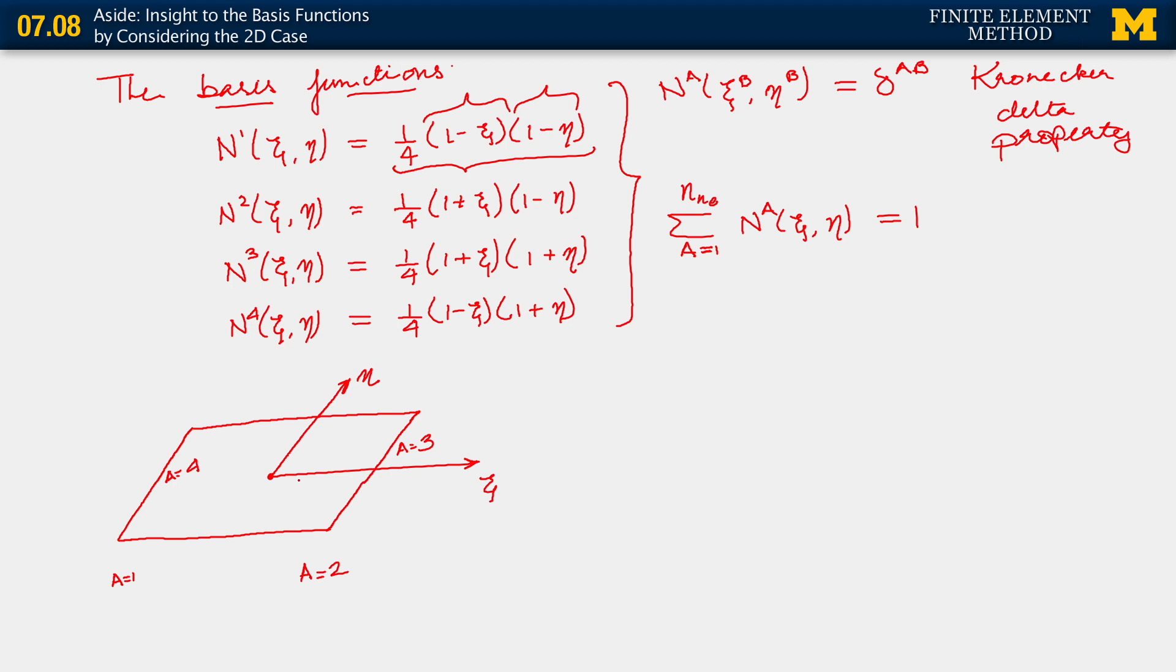I'm going to draw just the basis function corresponding to N4. So, I'll do this by changing colors here, and let's go with green. If you evaluate N4, what you see is that at xi and eta equal to minus 1 and 1, respectively, it takes on the value of 1. So this value is 1. This is N4 equals 1.